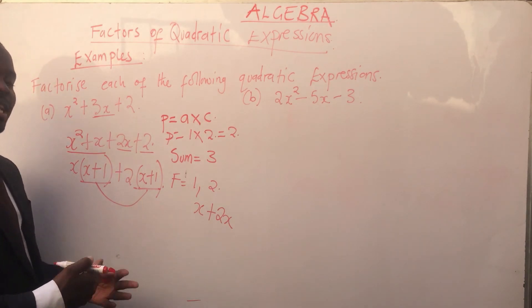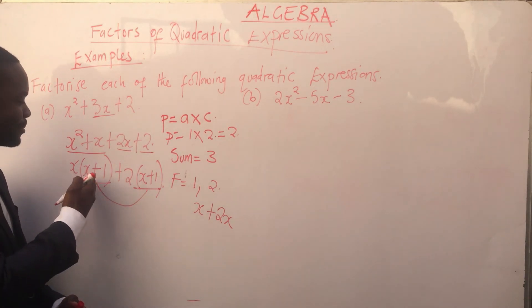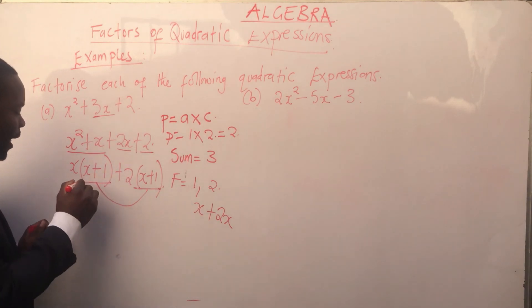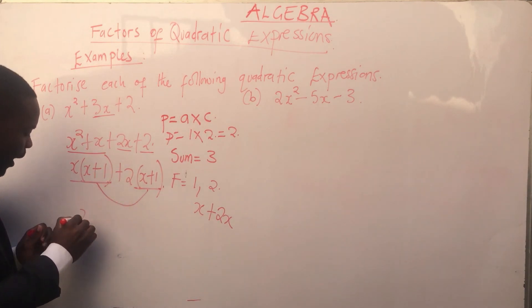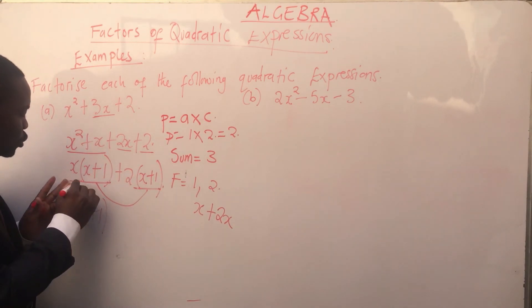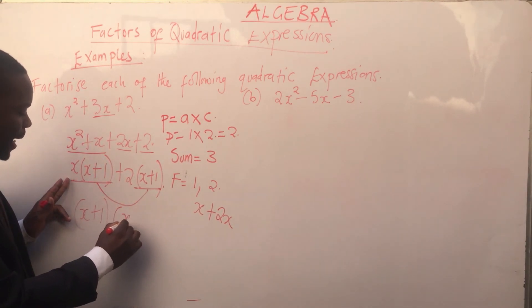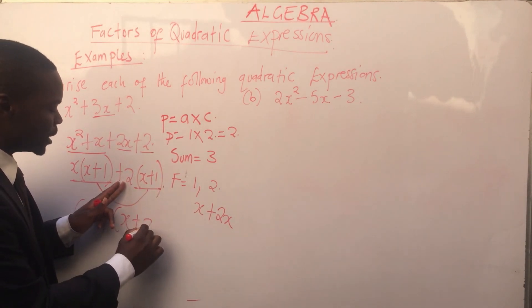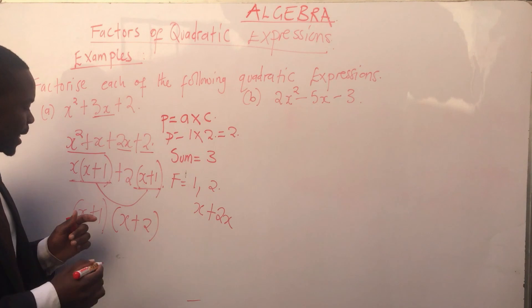From here, you can see that we have another factor which is x + 1. We can factorize further. x + 1 is common. When you divide x + 1 into this term, your answer is x. When you divide x + 1 into this term, your answer is positive 2.